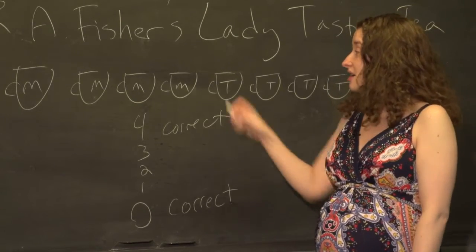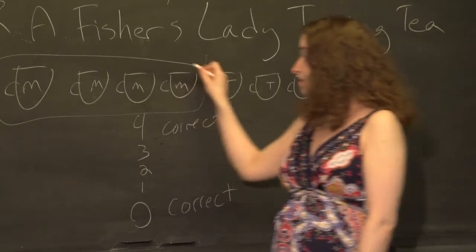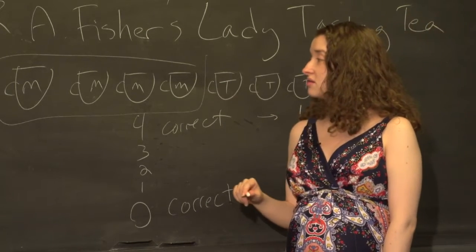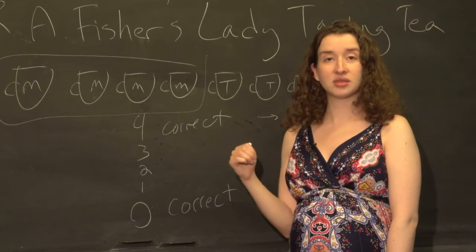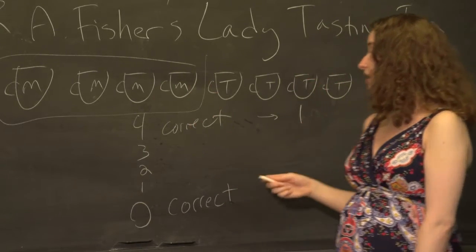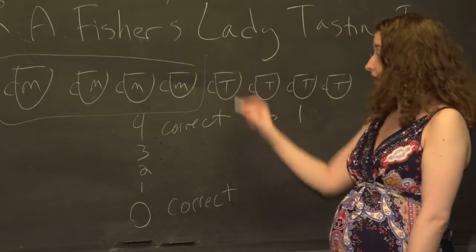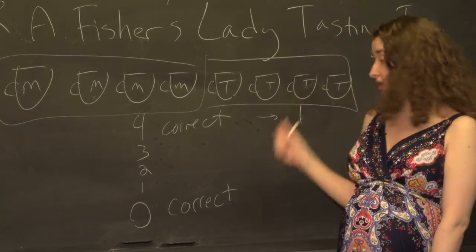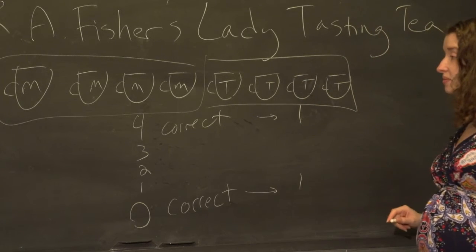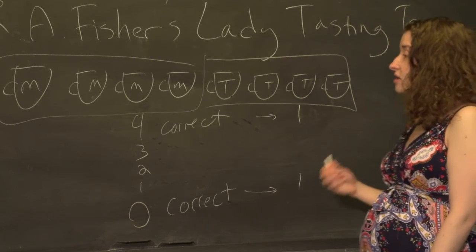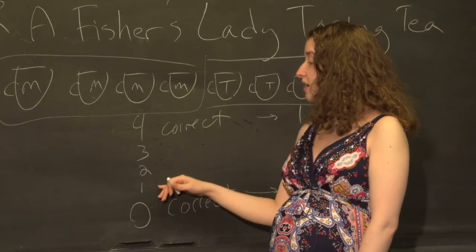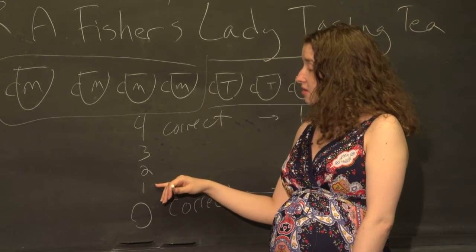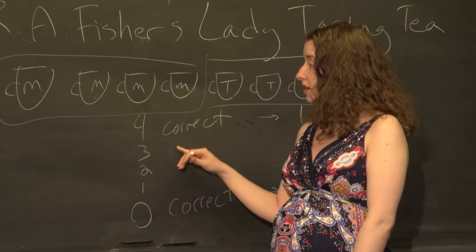There's only one set of four cups that are all milk — only one way to draw four correct cups. Similarly, if the lady has zero of them correct, there's only one set of four cups that are all wrong, all tea first. We can use a similar thought process to figure out how many sets of cups would be one correct, two correct, or three correct.